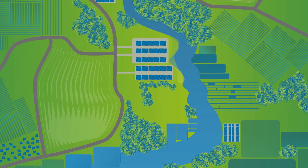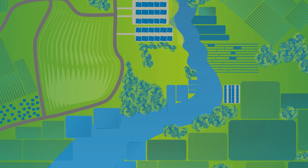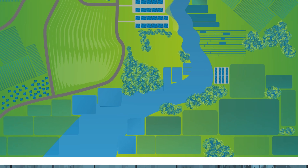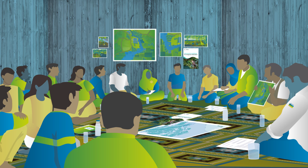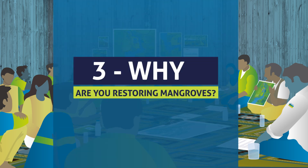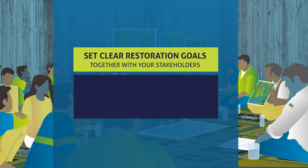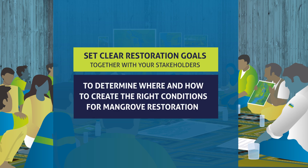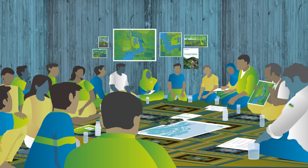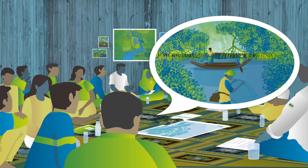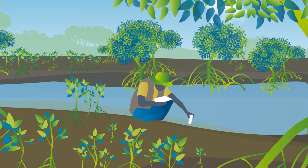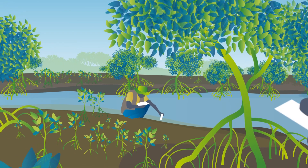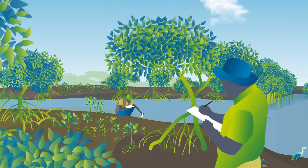In parallel, you should investigate the social factors that hamper mangrove regeneration, including land tenure and land uses. For this, you can set up a diverse working group with local communities, government representatives, and others. Lastly, why are you restoring mangroves? Set clear restoration goals together with your stakeholders to determine where and how to create the right conditions. For example, is the goal to support coastal fisheries, enhance biodiversity, or provide coastal protection? Make sure success criteria are clearly defined so you can monitor them and correct your restoration strategy when needed.